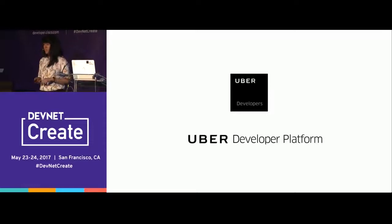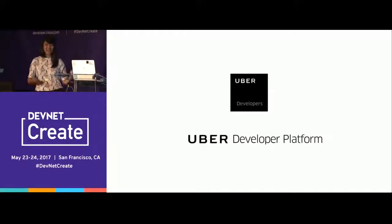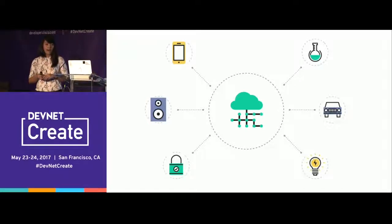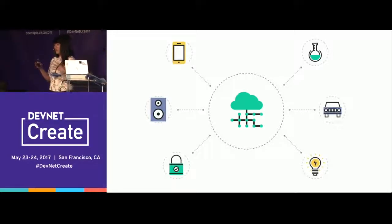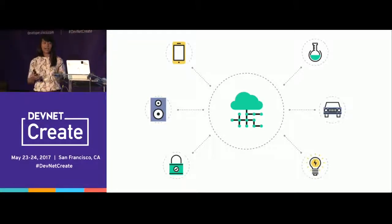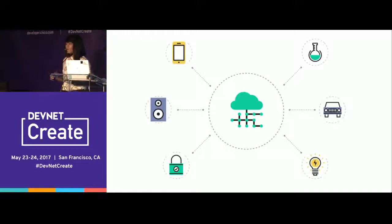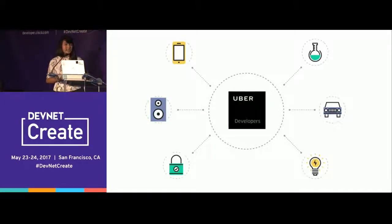Imagine your hotel room detecting that you're about to arrive and turning up the temperature to your ideal climate, turning on the lights, maybe even playing some smooth jazz. All of that is possible with the Uber developer platform. Show of hands — how many knew about the Uber developer platform before right now? This platform enables apps — whether conversational, graphical, or messaging — to automate actions based on the data it provides, creating a context-driven world.